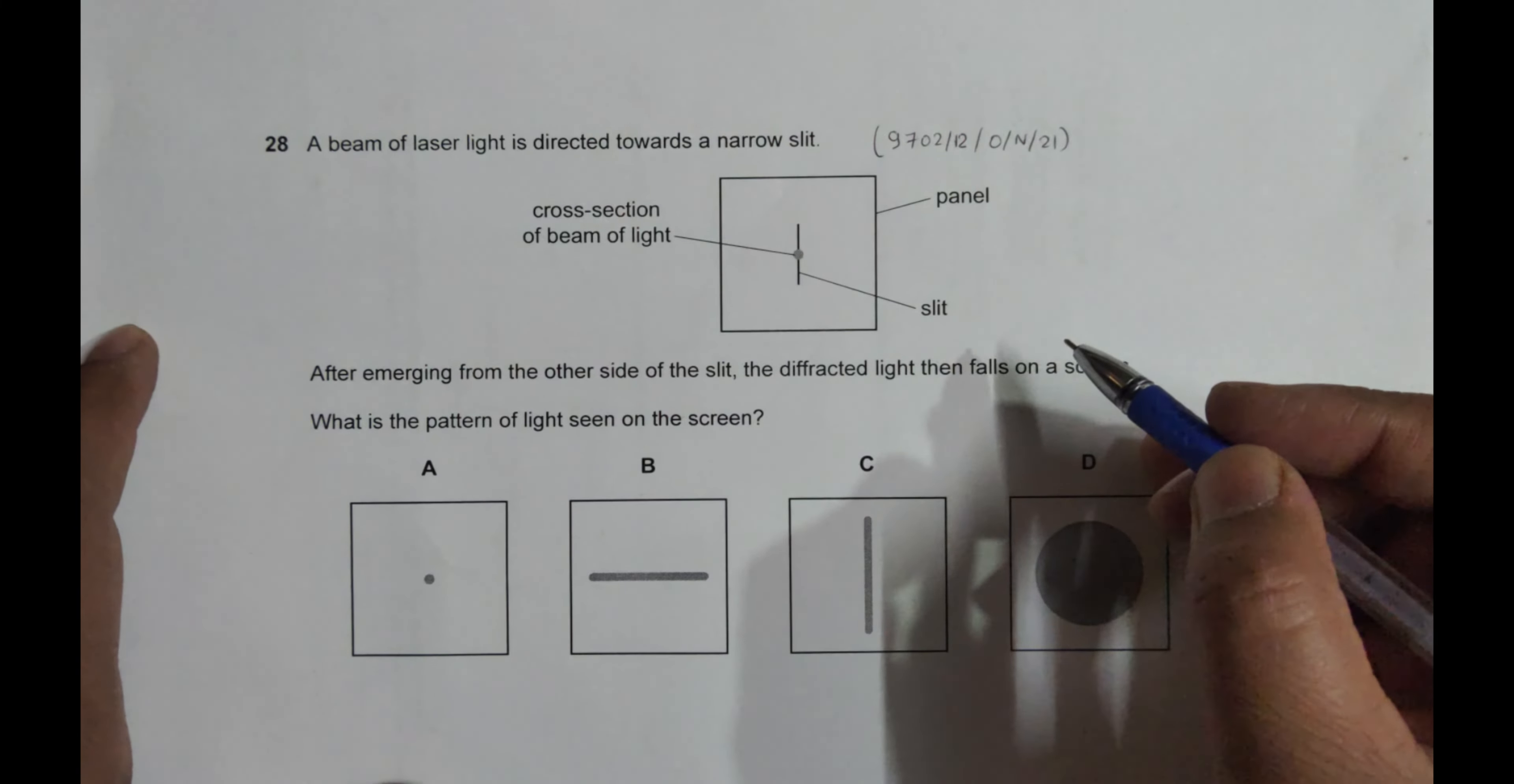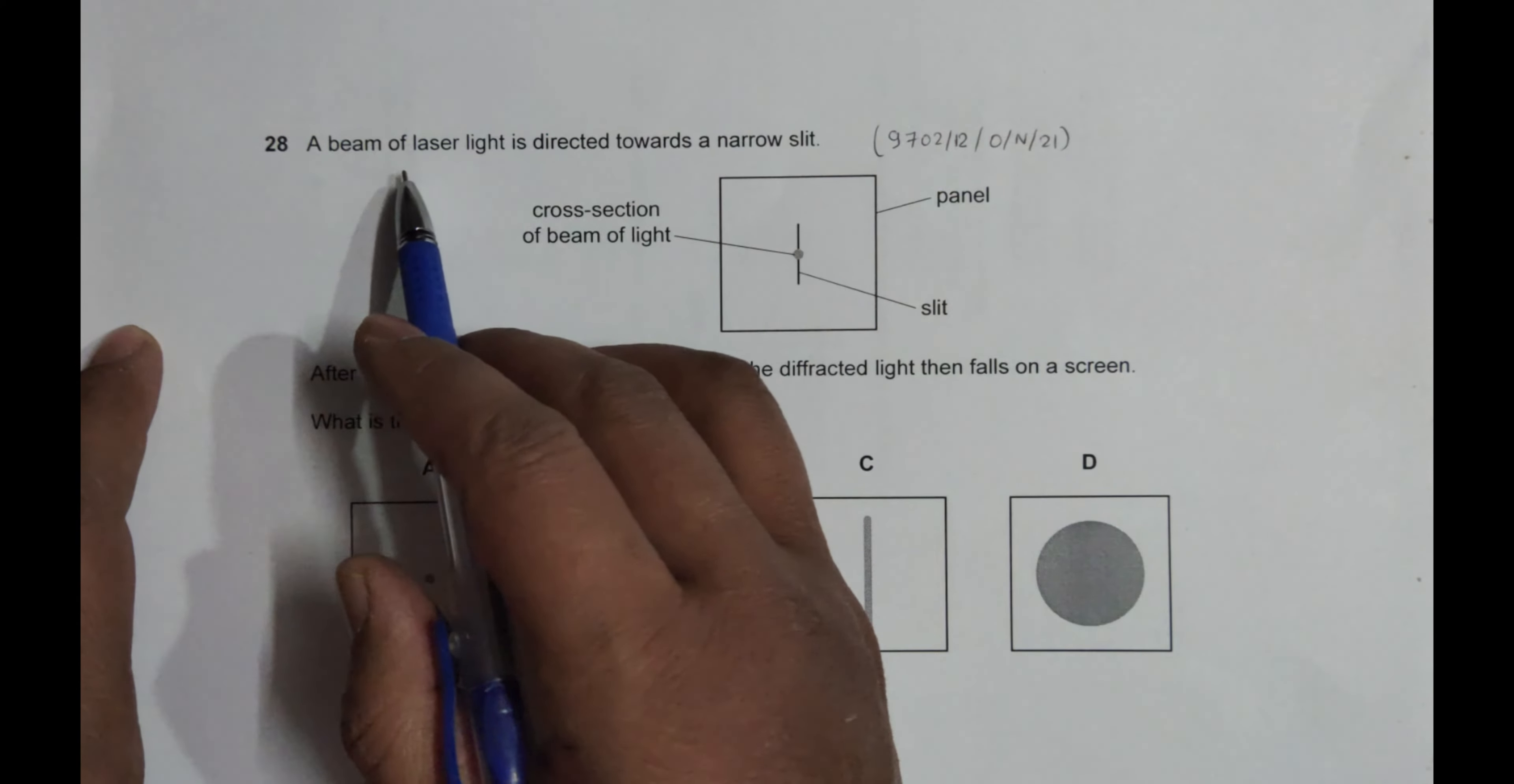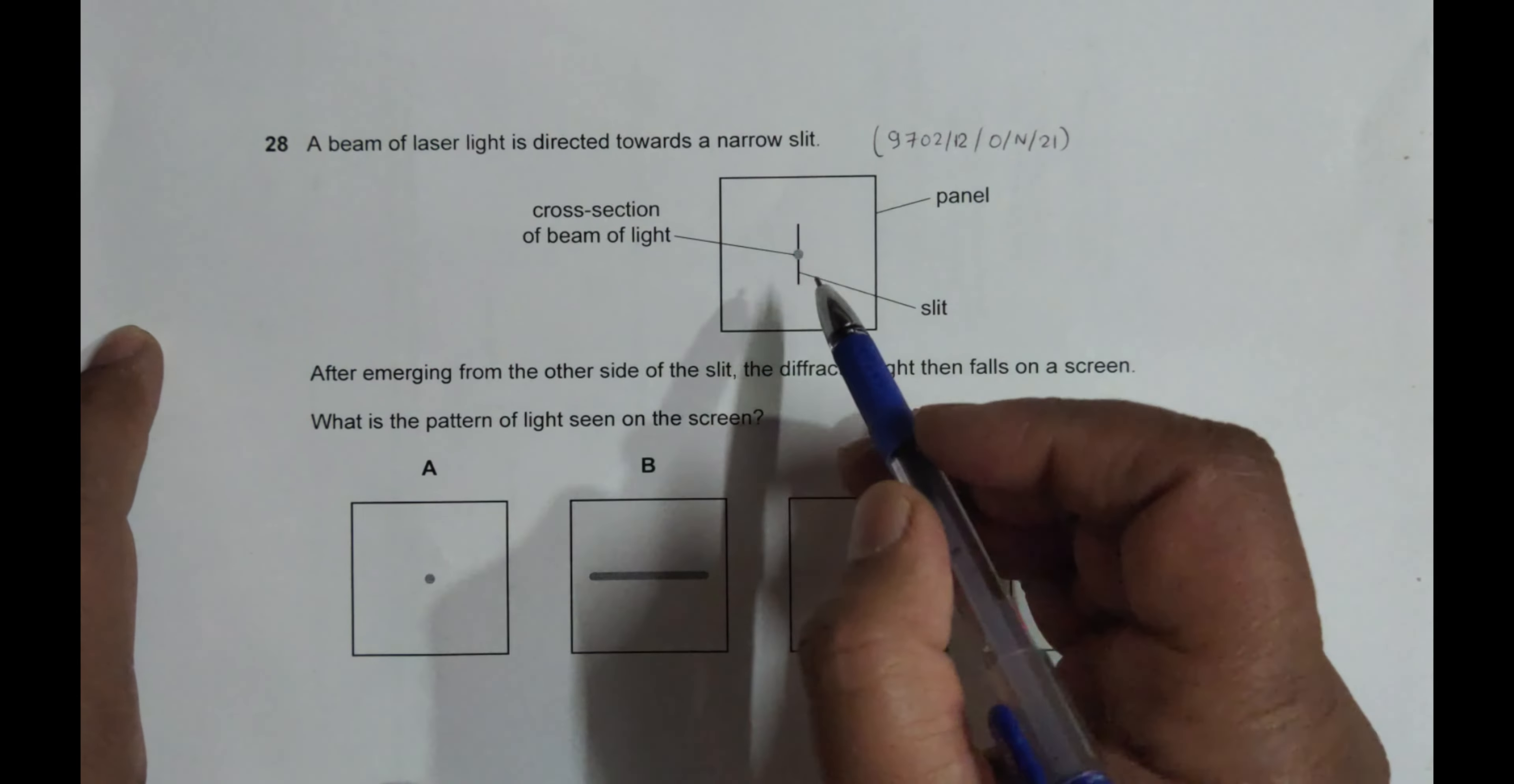It is concerned with the chapter superposition and the topic is diffraction. It says a beam of laser light is directed towards a narrow slit. So narrow slit is here and the beam is here.